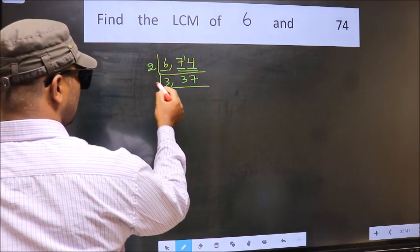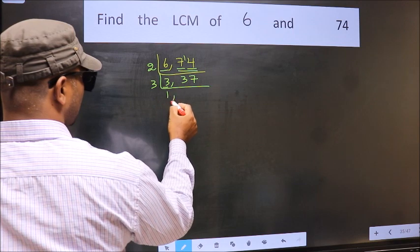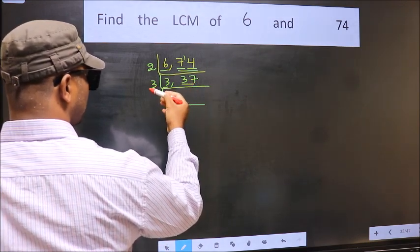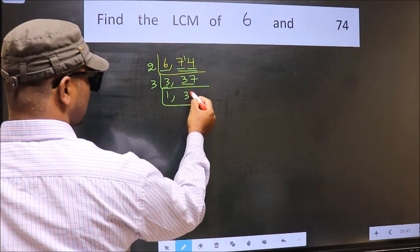Now here we have 3. 3 is a prime number so 3 times 1 is 3. Now 37 is not divisible by 3 so we write it down as it is.